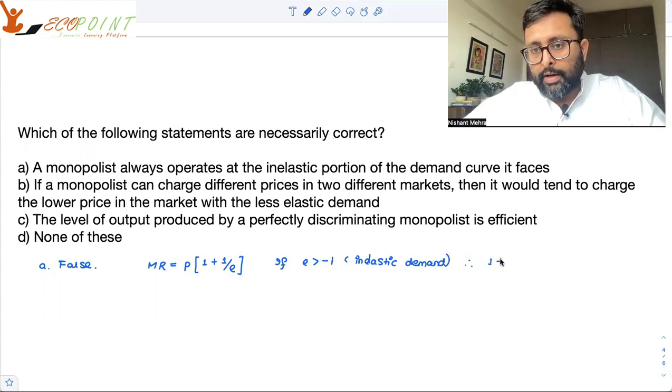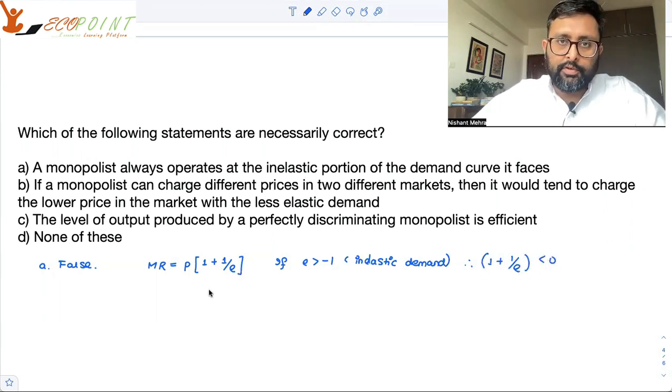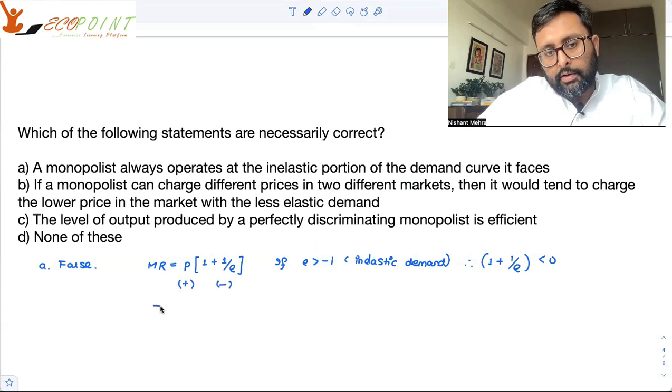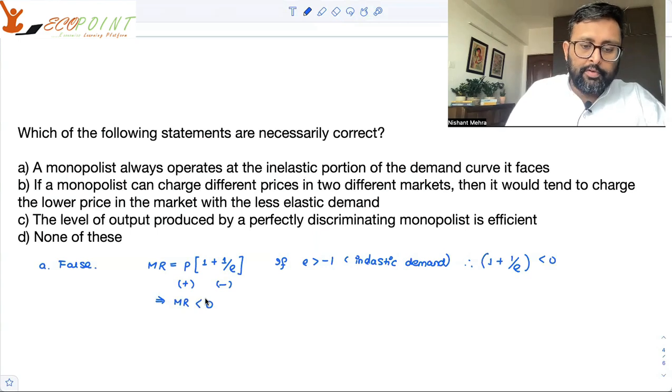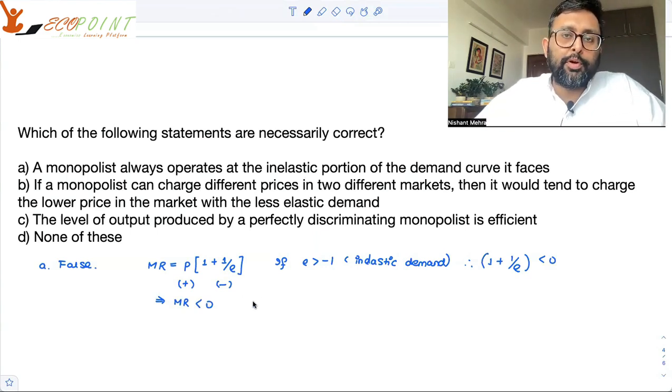Therefore, 1 plus 1 upon E, this thing in the bracket is less than 0. P is positive. This is positive. This term is negative. So that will make MR negative. That will make MR negative.